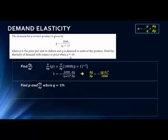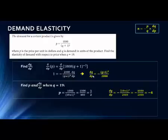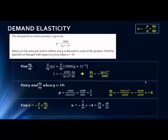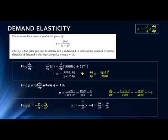Now I want to find the elasticity specifically when Q equals 19. Plugging into the original equation gives P equals five-halves, or $2.50. Plugging Q equals 19 into the derivative gives dQ/dP equals negative 4. With all these values, the elasticity equals negative P (five-halves) over Q (19), times dQ/dP (negative 4), which gives 10/19. Since the numerator is less than the denominator, this is less than 1, so our demand is inelastic — meaning as our price changes, the demand does not change very much.